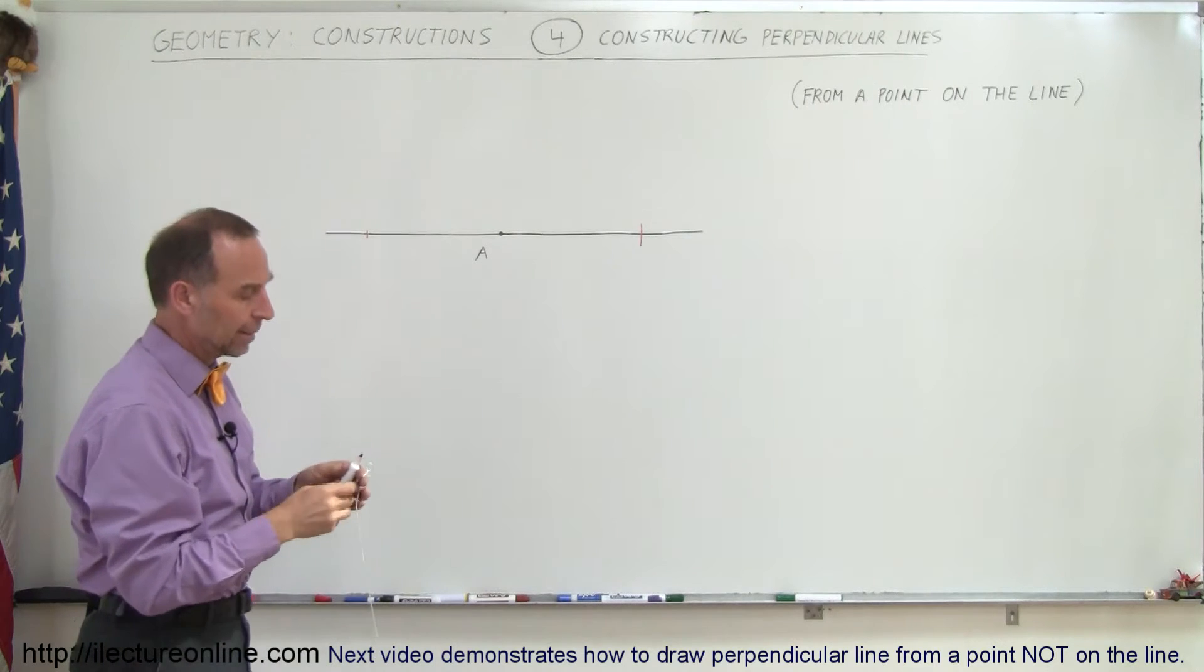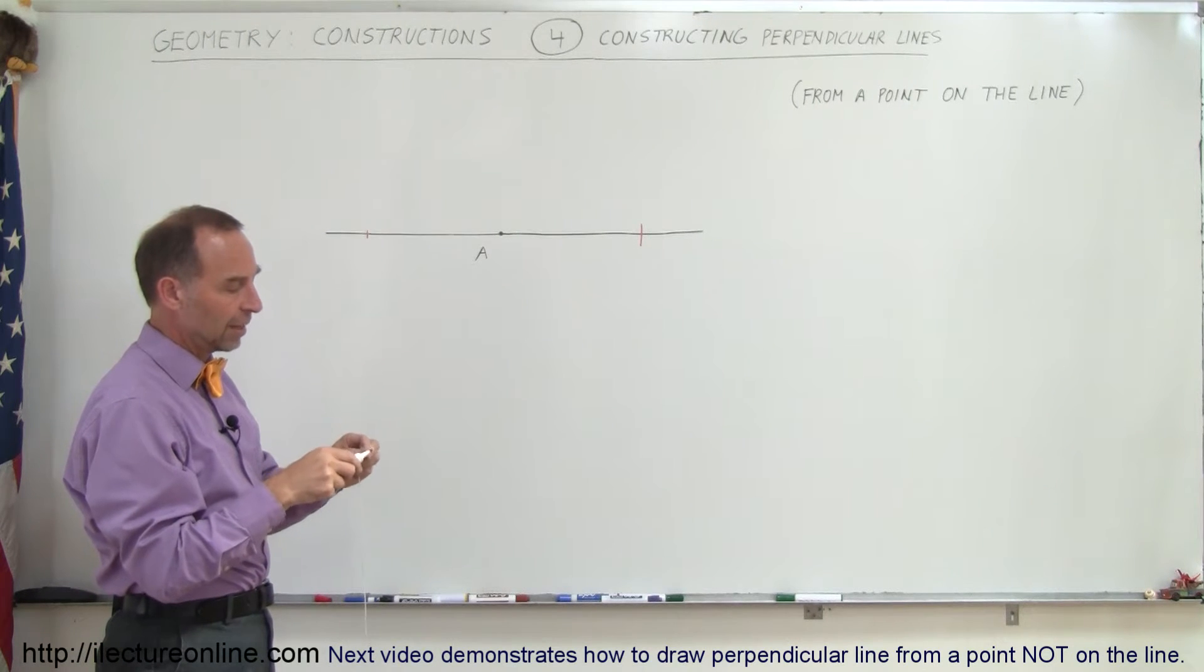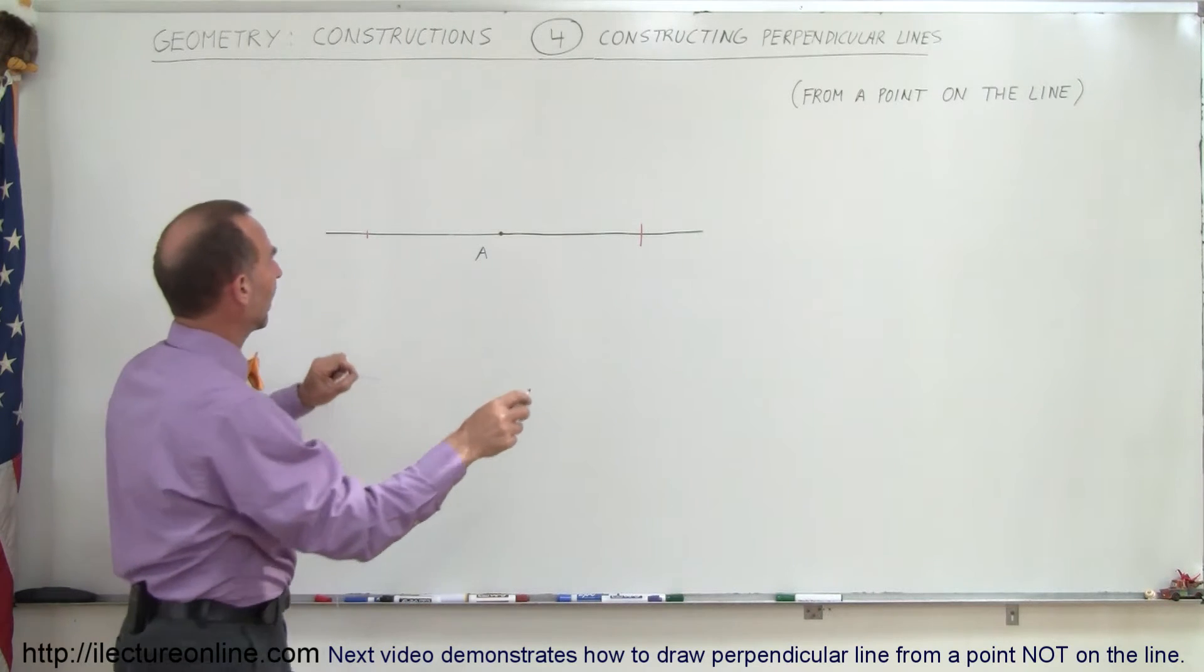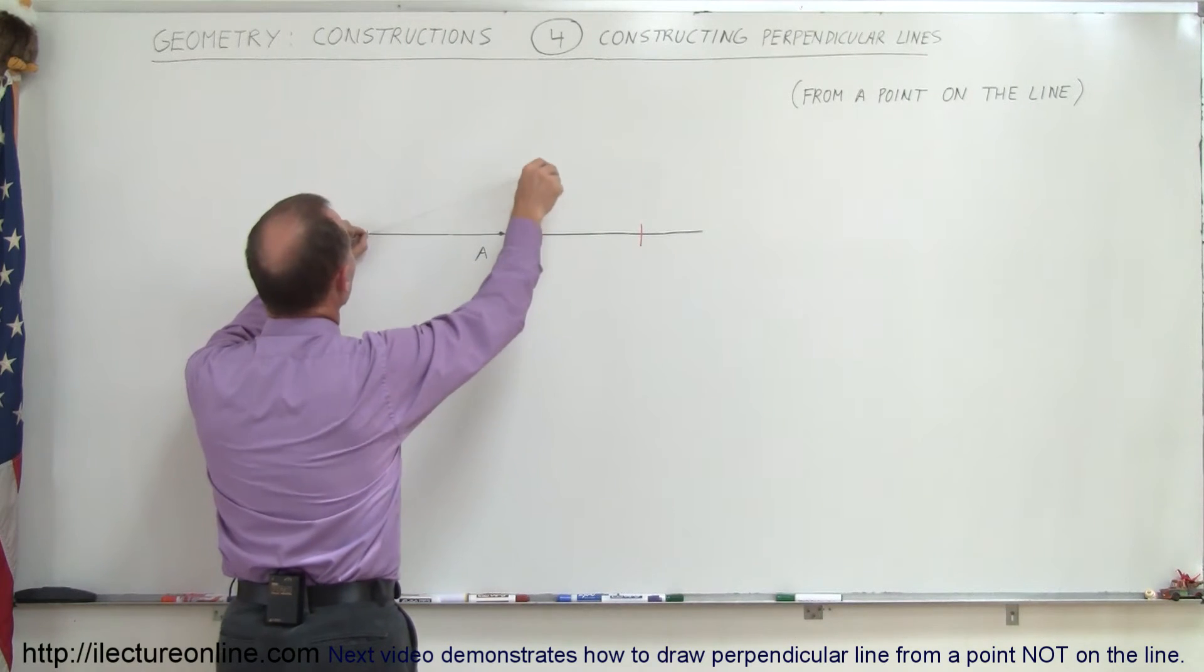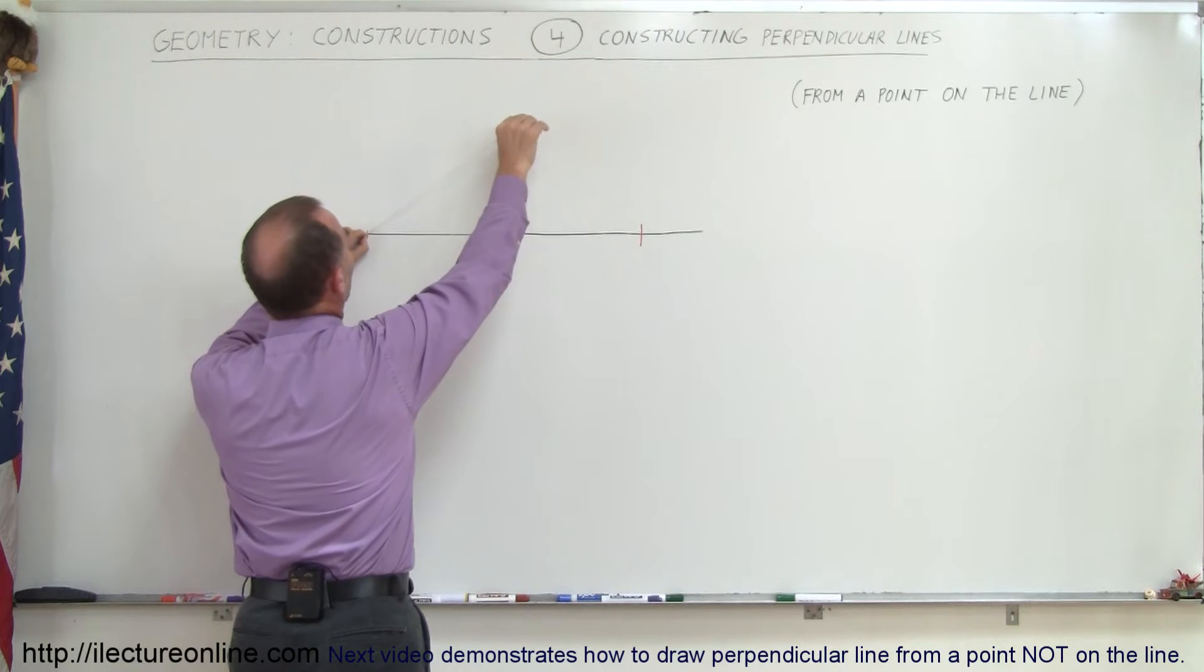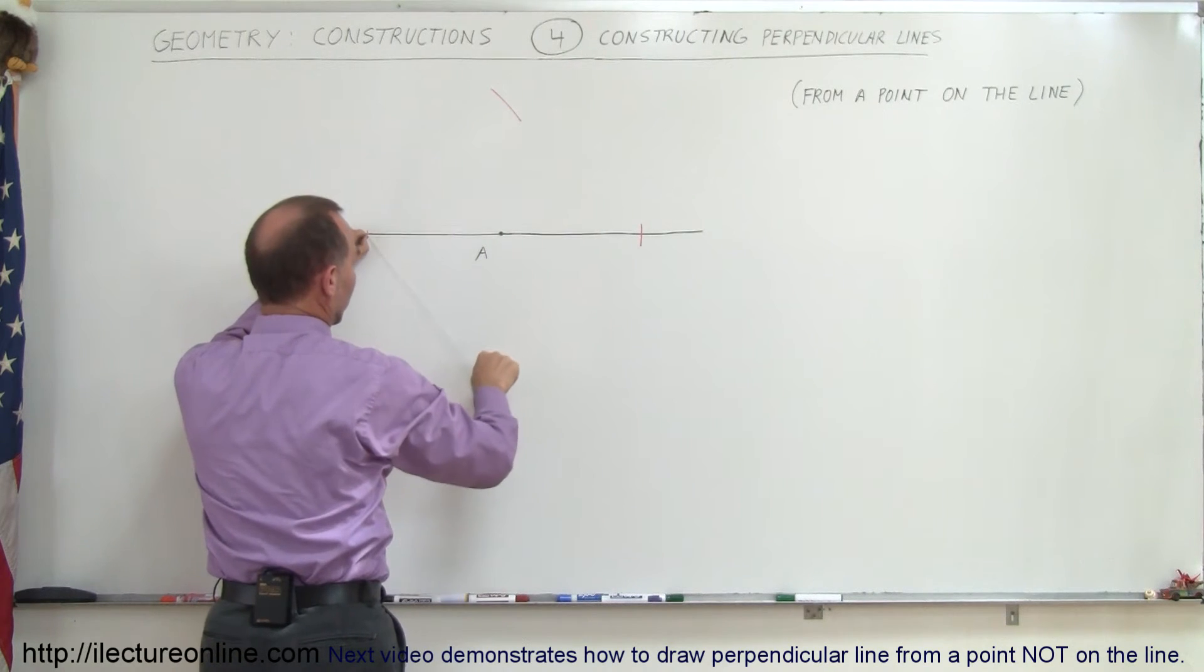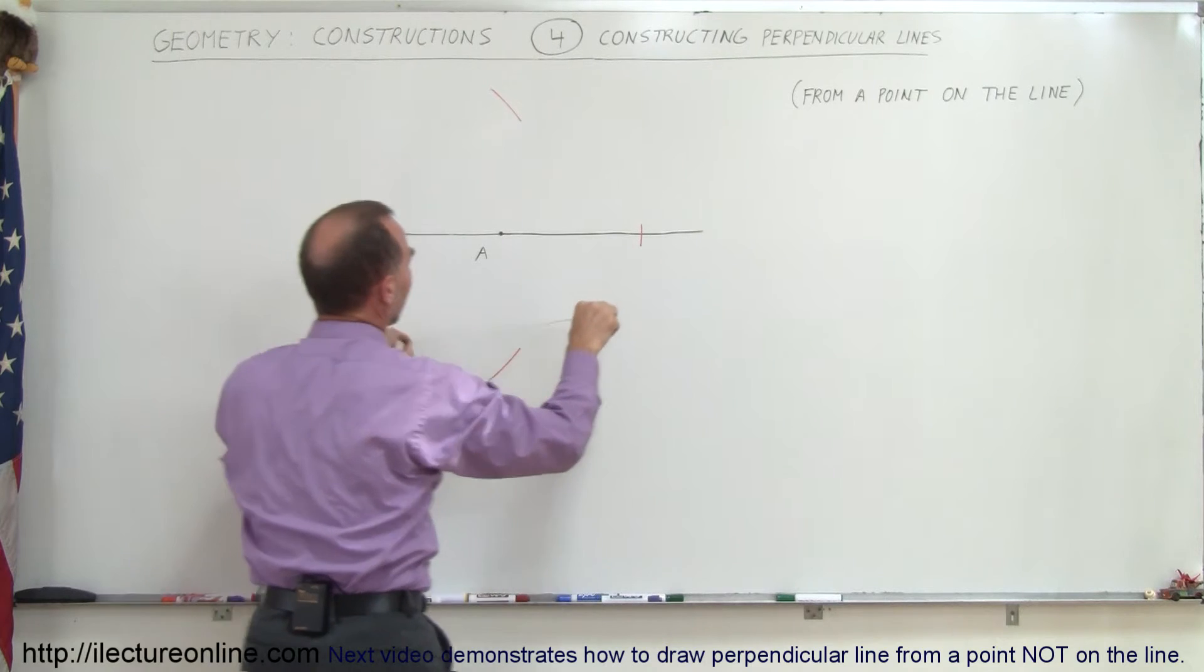Now again I use my compass. I make the line a little bit longer, go to my left point right there, and draw an arc from that point in this direction, and again over in the opposite direction.